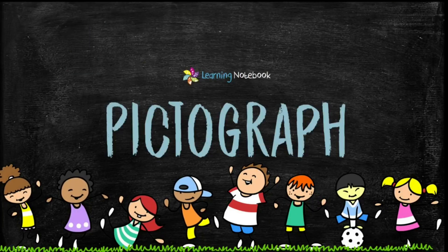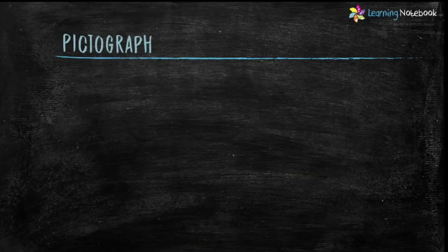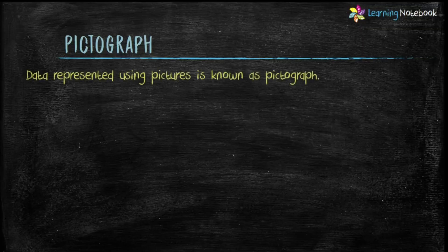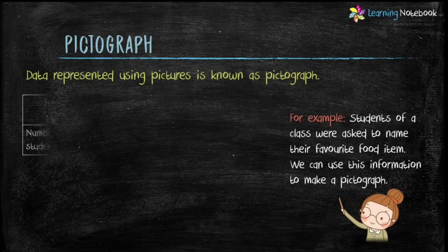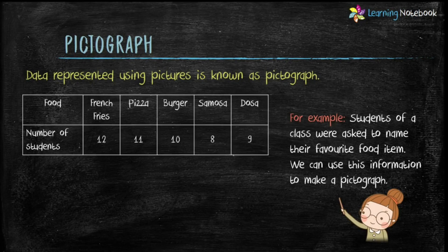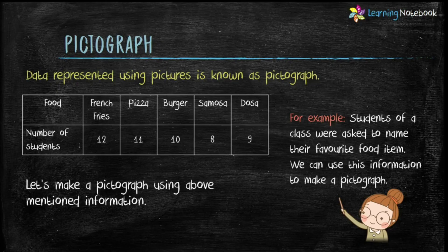Now let's see how data is represented using a pictograph. Data represented using pictures is known as a pictograph. For example, students of a class were asked to name their favorite food item, and based on this we have prepared a list. We can use this information to make a pictograph.